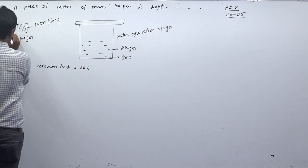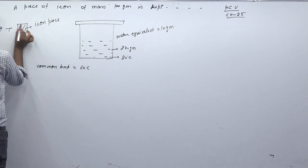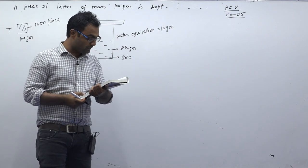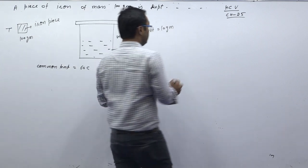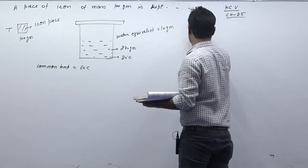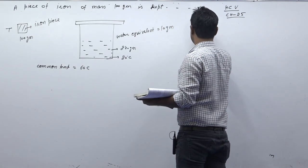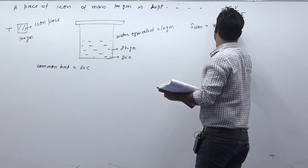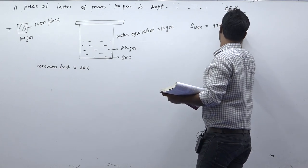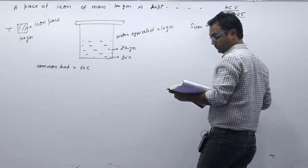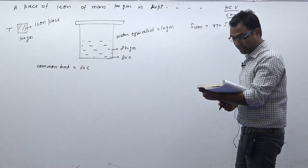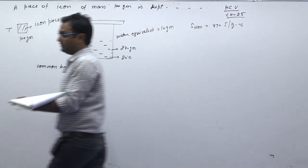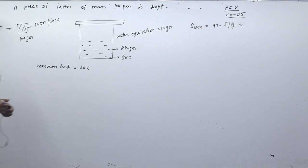Let the furnace temperature be T. The specific heat capacity of iron is given as 470 joules per kg per degree Celsius. This is a good question — let's start solving it.